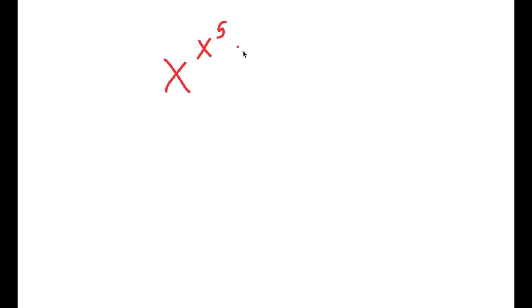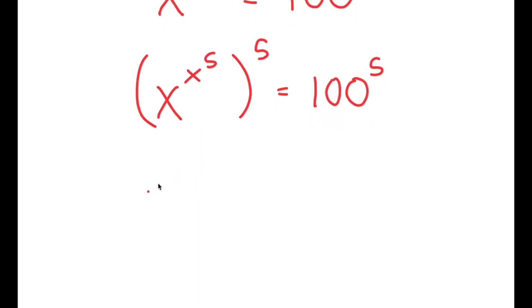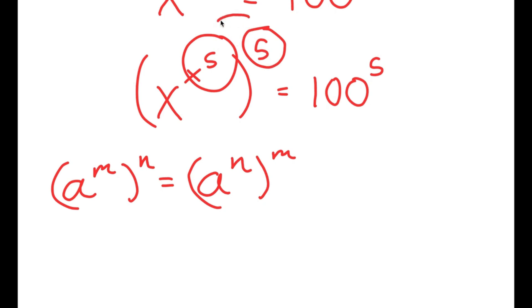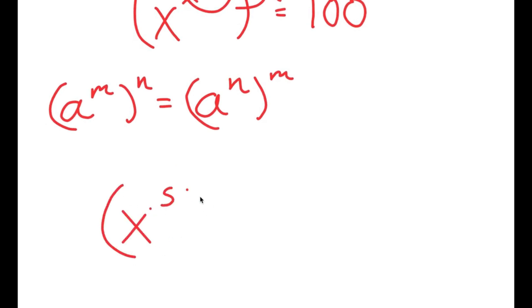In this video, I'm going to solve the equation x to the power of x to the power of 5 is equal to 100. To solve this equation, I'm going to first start by taking the 5th power on both sides. Using the property a to the power of m to the power of n equals a to the power of n to the power of m, I can switch the places of these two. So now I get x to the power of 5 to the power of x to the power of 5, is equal to 100 to the power of 5.